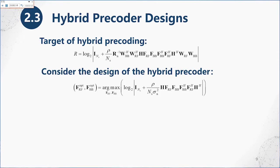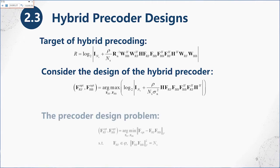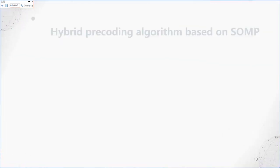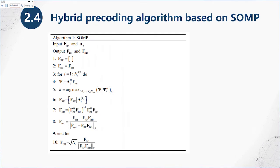According to mathematical derivation, the joint optimization problem can be decoupled, and then we only consider the design of the hybrid precoder. In general, the precoder design problem can be written as shown. The classical hybrid precoding algorithm is based on simultaneous orthogonal matching pursuit, and the main steps of the algorithm are shown in the table.